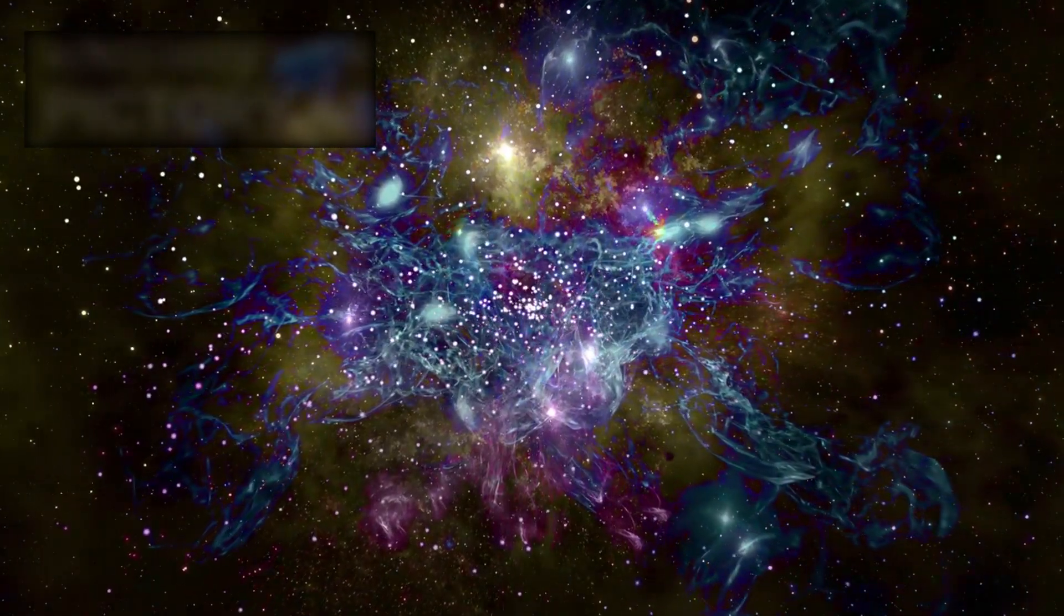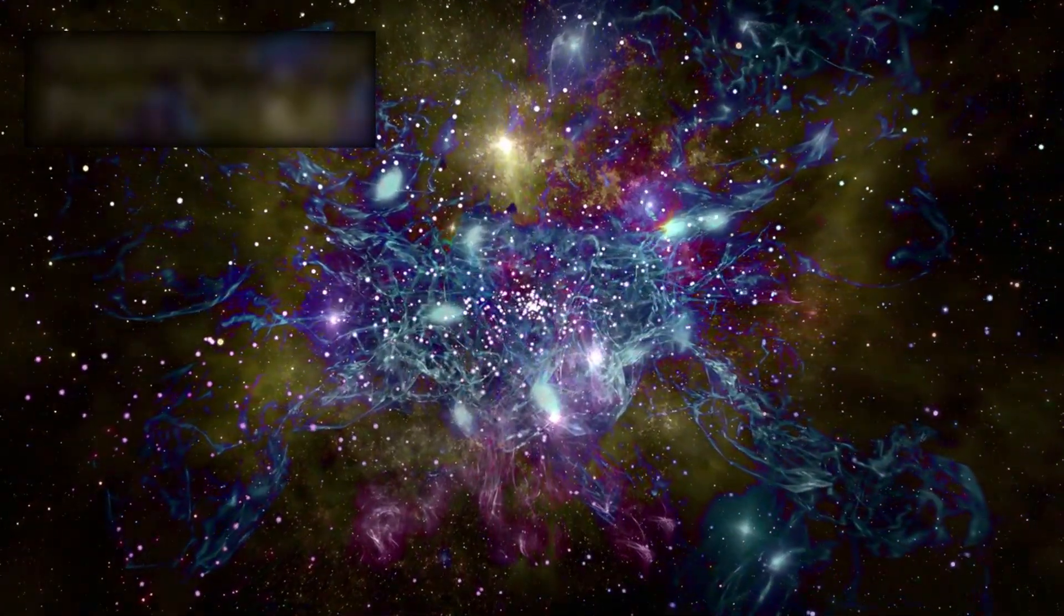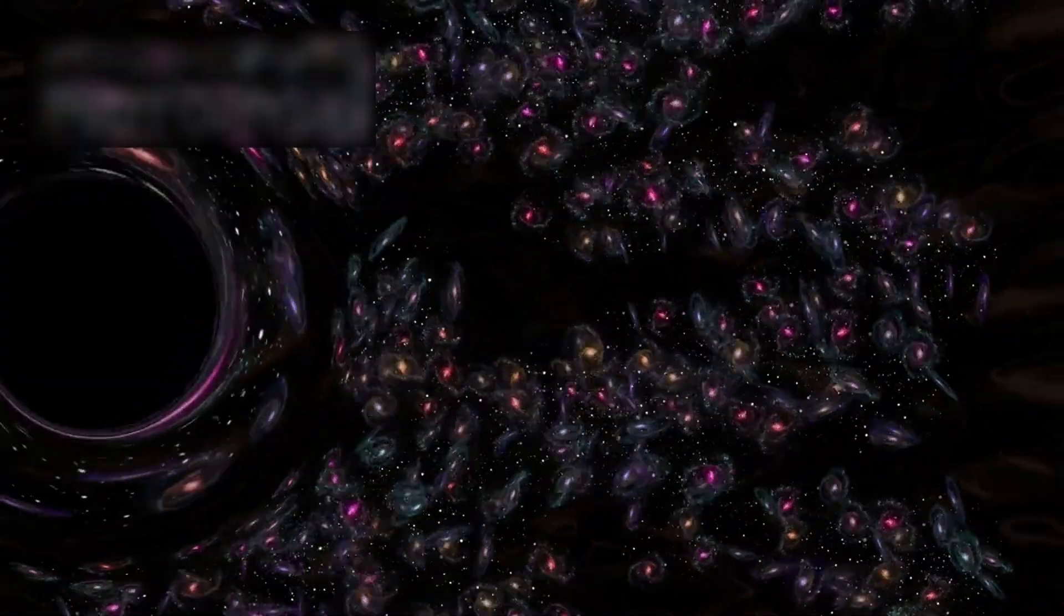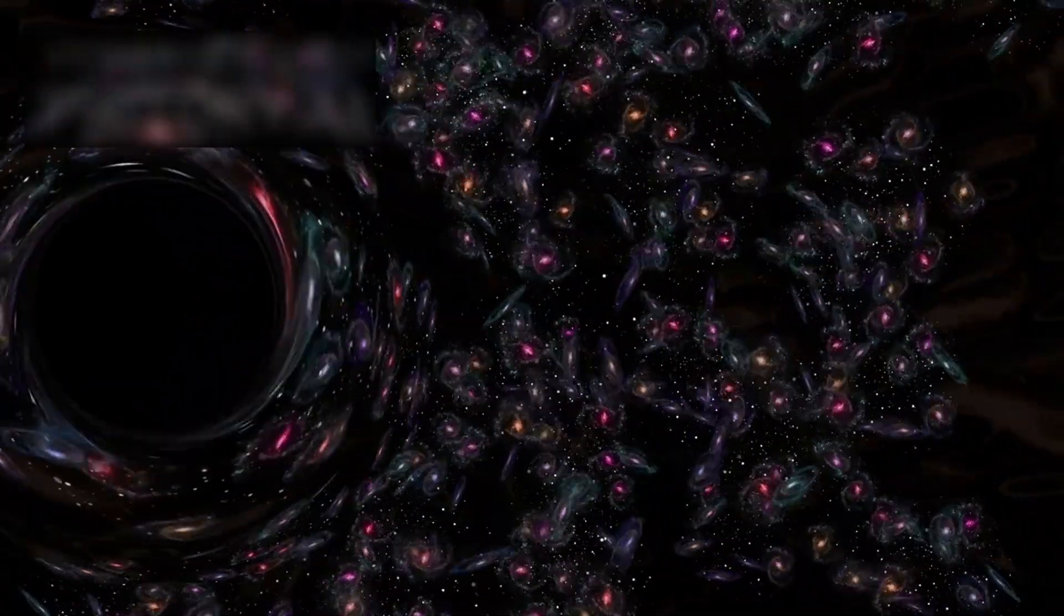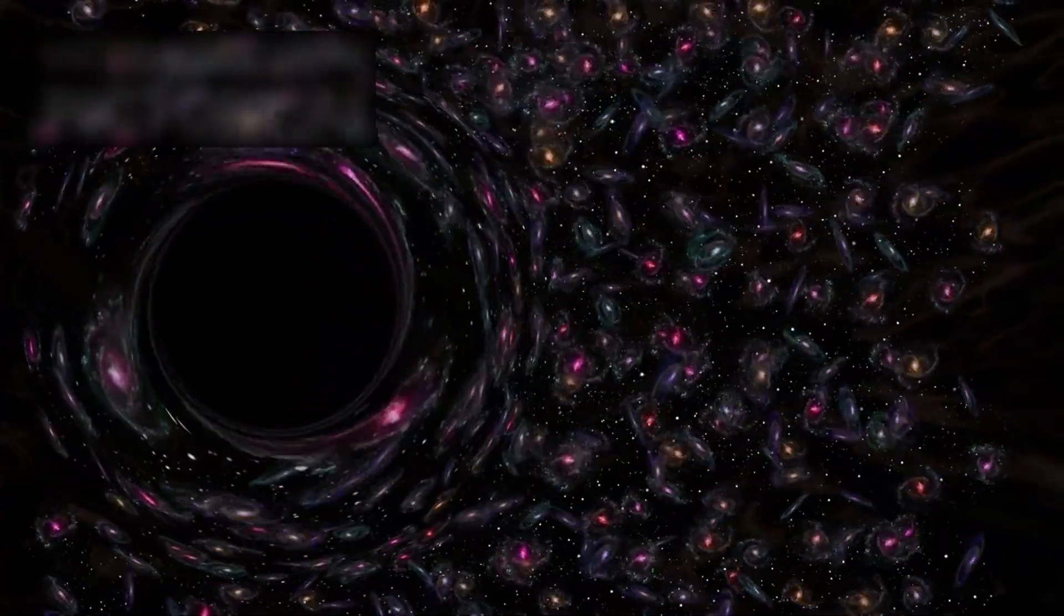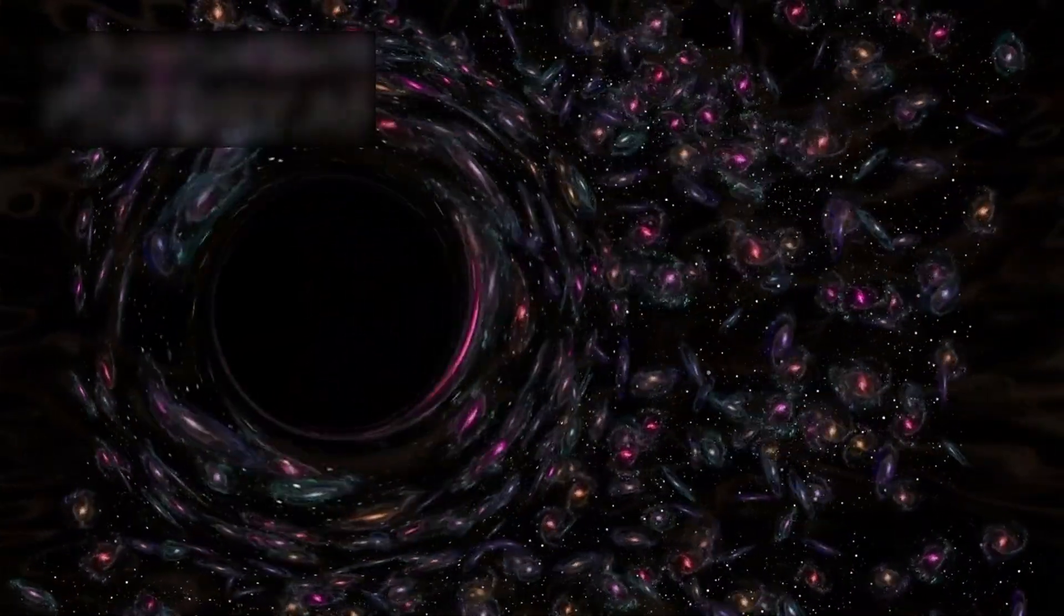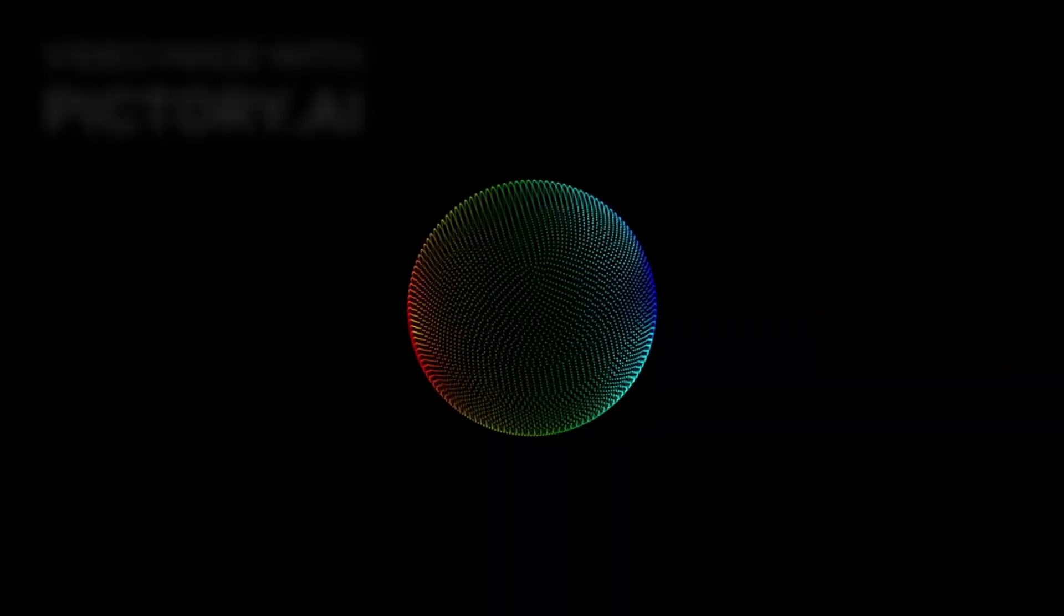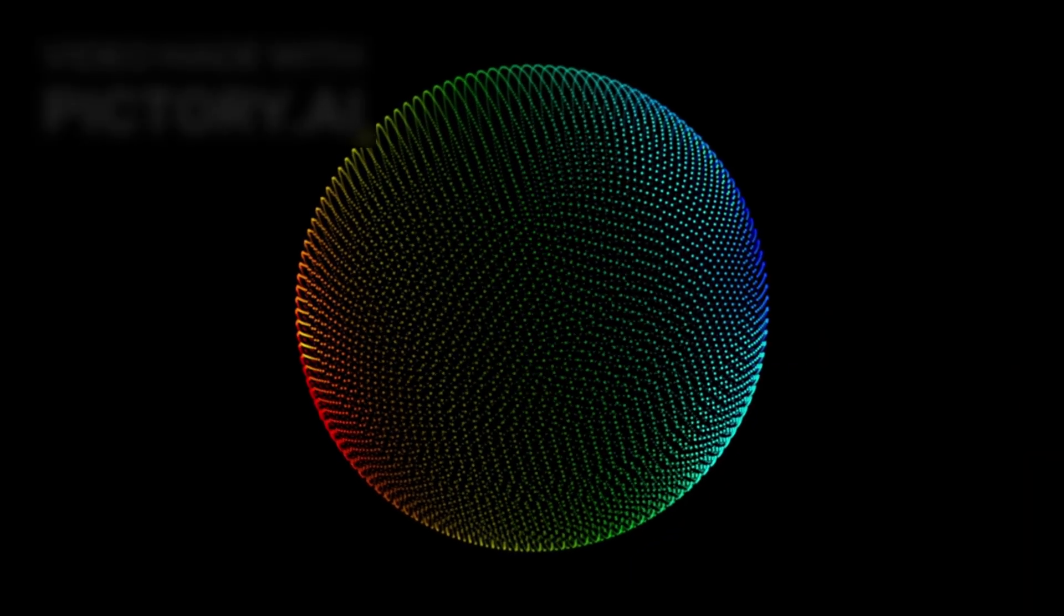By every model we know, galaxies should take billions of years to grow this large and complex. Yet Webb has found them existing just 600 million years after the Big Bang, some harboring black holes thousands of times more massive than the one at the heart of the Milky Way. It is as if the universe itself had fast-forwarded through its own evolution.